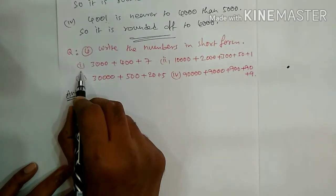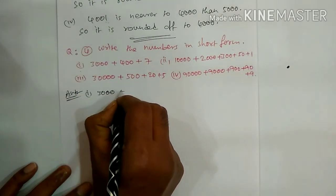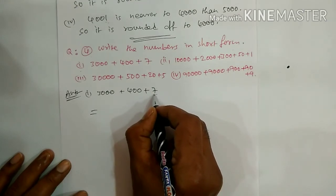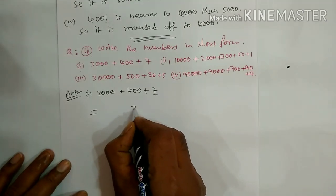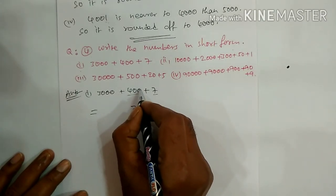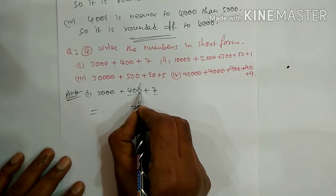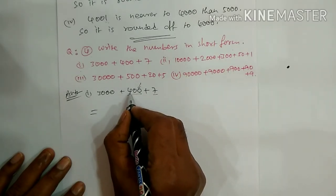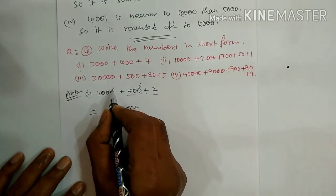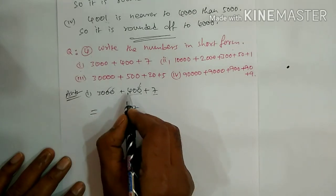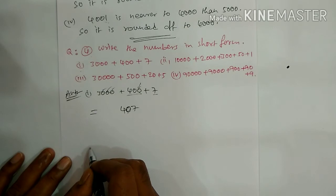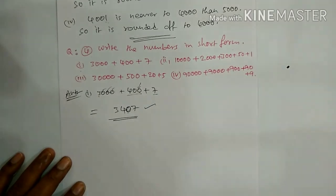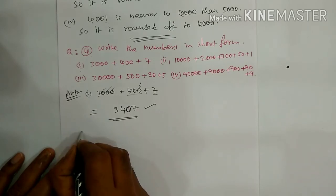Question number 4: write the numbers in short form. First: 3000 plus 400 plus 7. Units place is 7, tens place is 0, hundreds place is 4, thousands place is 3. So the short form is 3407.